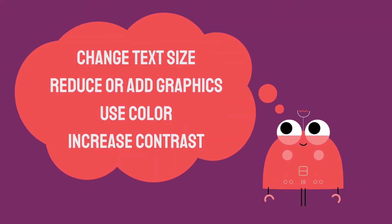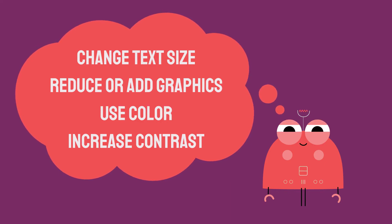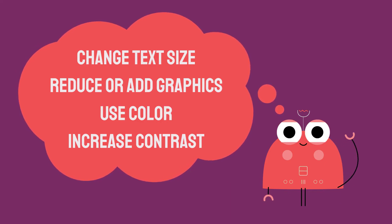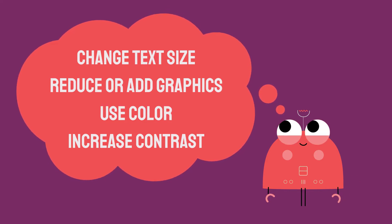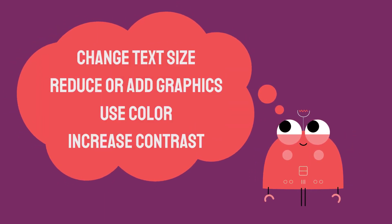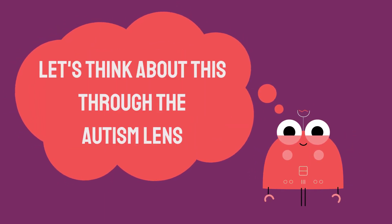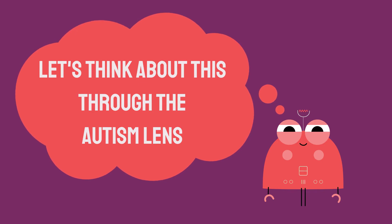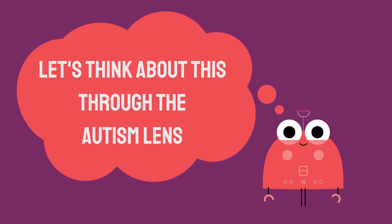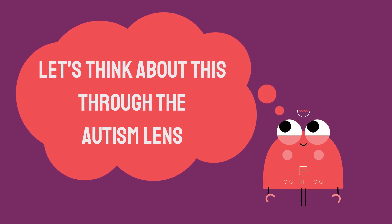We can customize the display of information in many ways for all learners. We can change text size, reduce or add graphics, use color, or increase the contrast between the background and text on a page. In addition to these visual customizations with print, we can also think about it from the lens of autism. There are many ways to reduce visual distractions in your space.